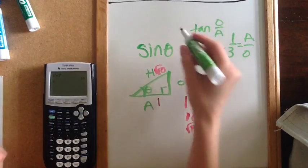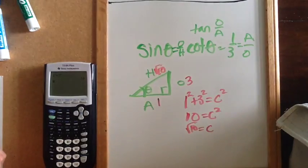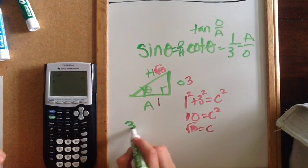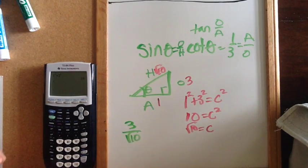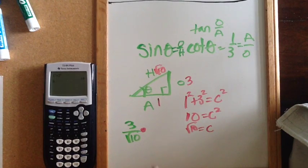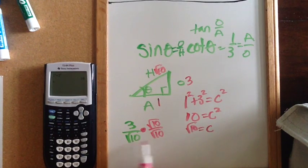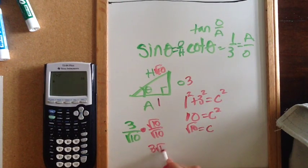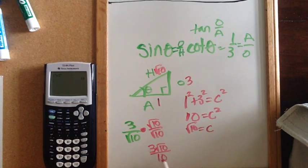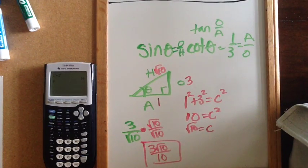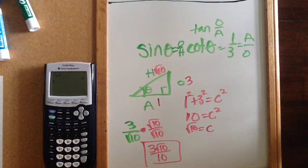Now that I have all three sides, the sine is opposite over hypotenuse — so I take the opposite, which is 3, over the hypotenuse, which is √10. But remember, we don't like roots in the denominator, so I multiply by 1 in the form of √10 over √10. That gives me 3 times √10 over √10 times √10, which is 10. So I have 3√10/10. I check if 3 and 10 can be reduced — they can't — so I'm all done.